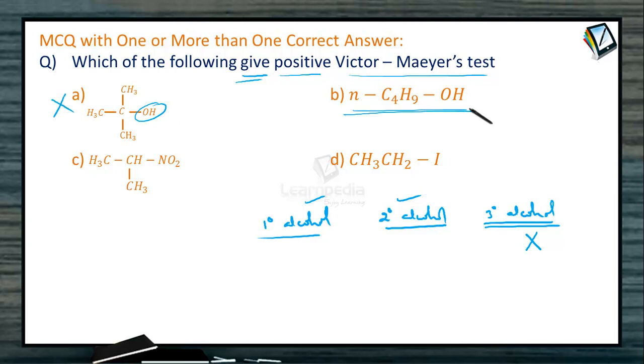This is N-butyl alcohol, primary alcohol, so it is 1° alcohol, hence it gives the Victor-Mayer test. This one is nitroalkane.